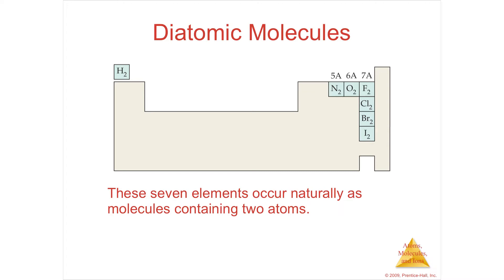Nitrogen's the same, N2. Oxygen is O2. And then the first four in the column of group 7, the halogens: fluorine, chlorine, bromine, and iodine. All of these are always I2, Br2, Cl2. They're always diatomic.